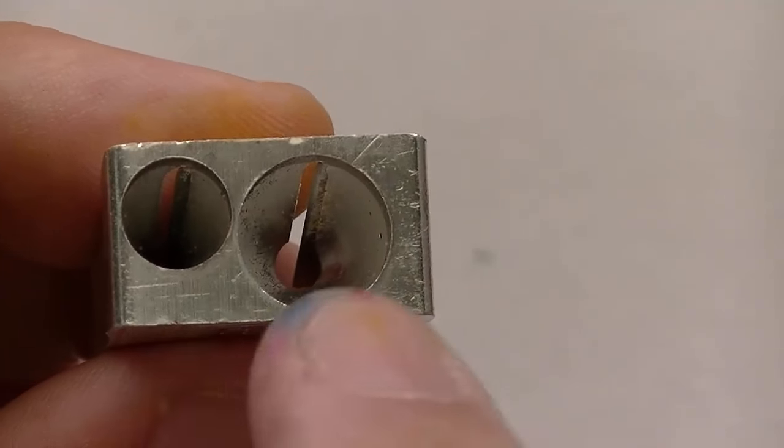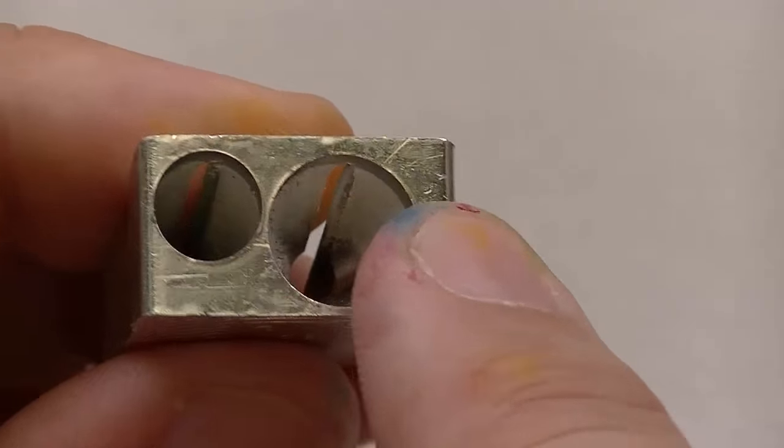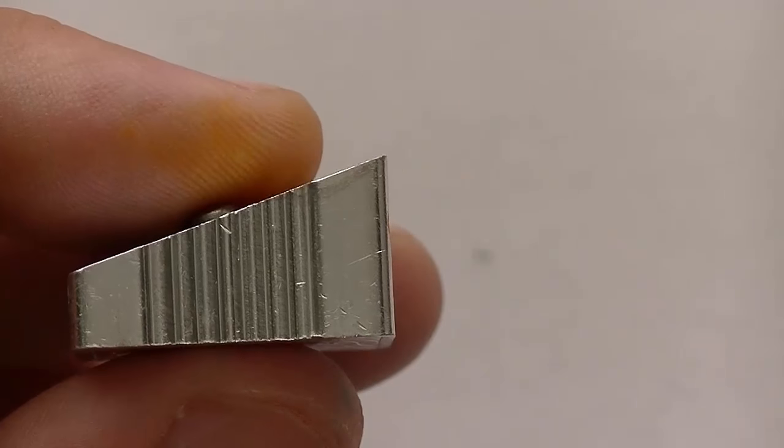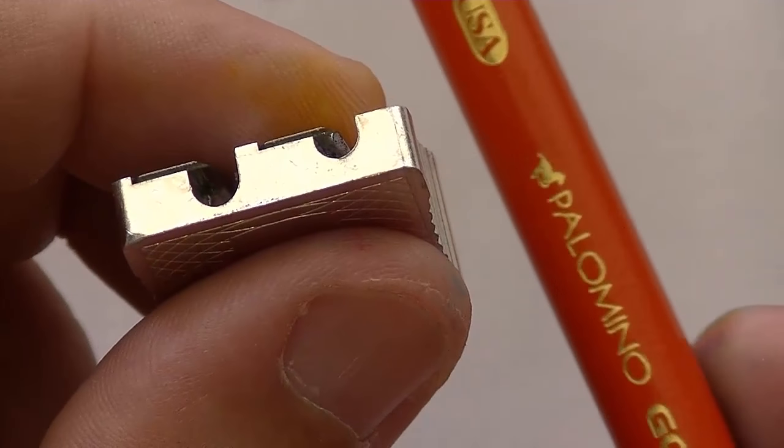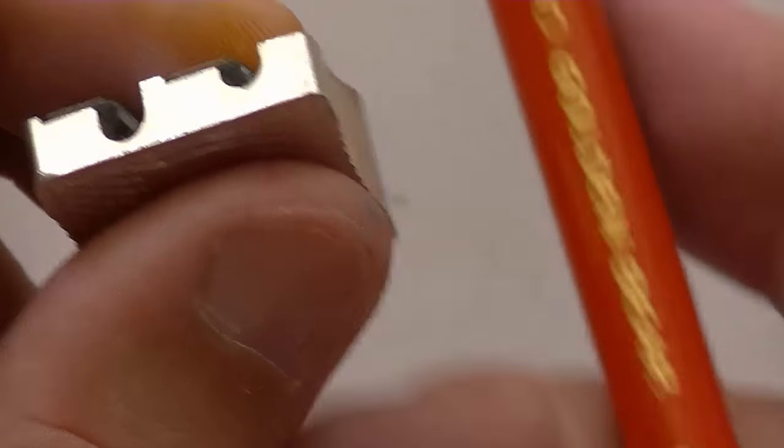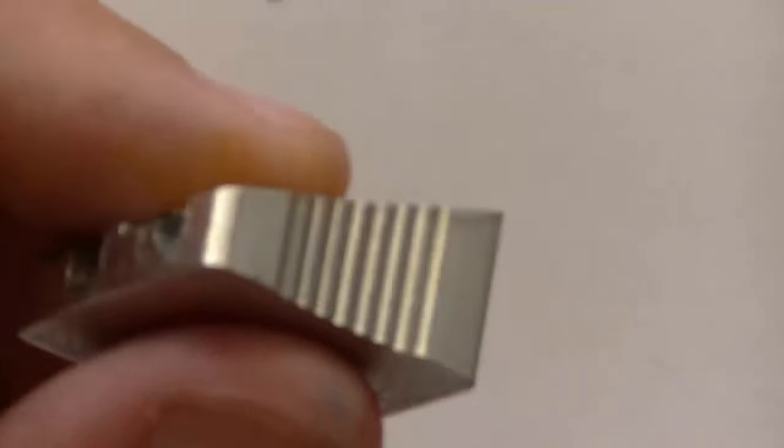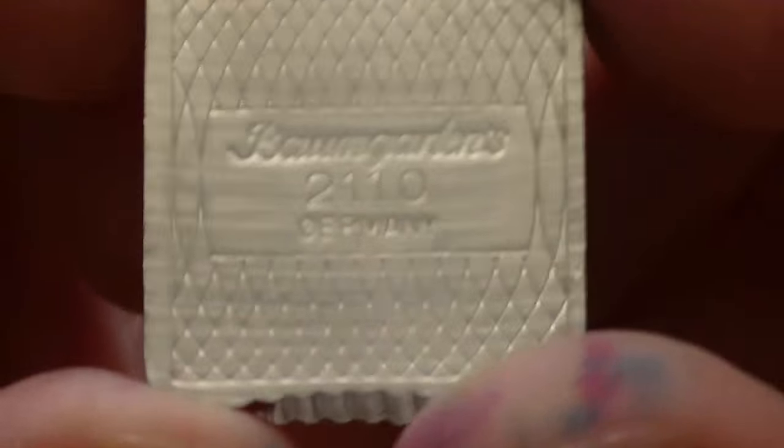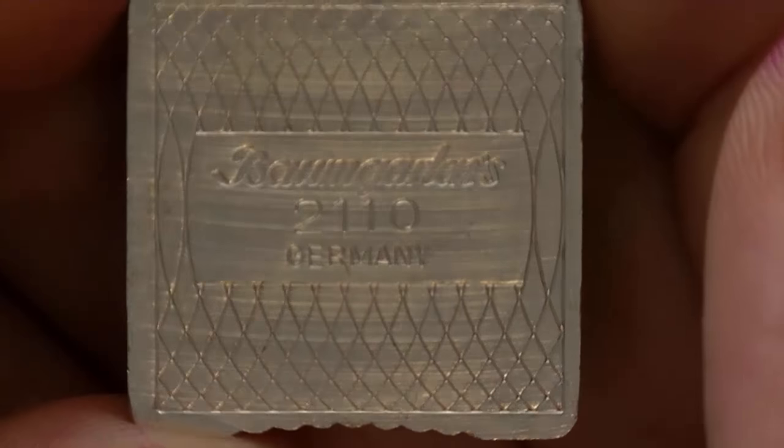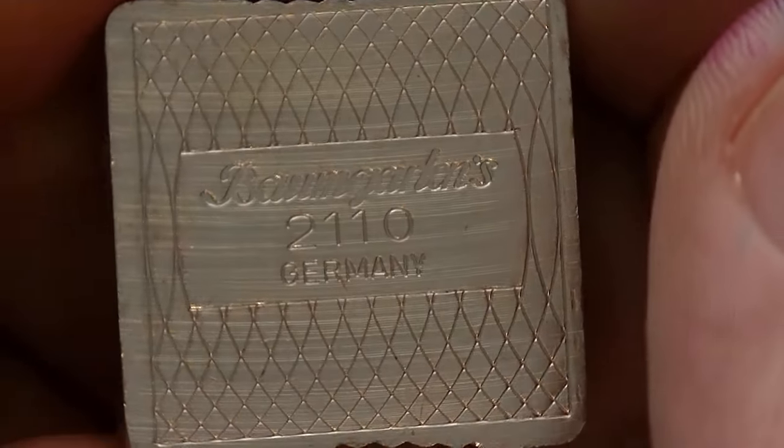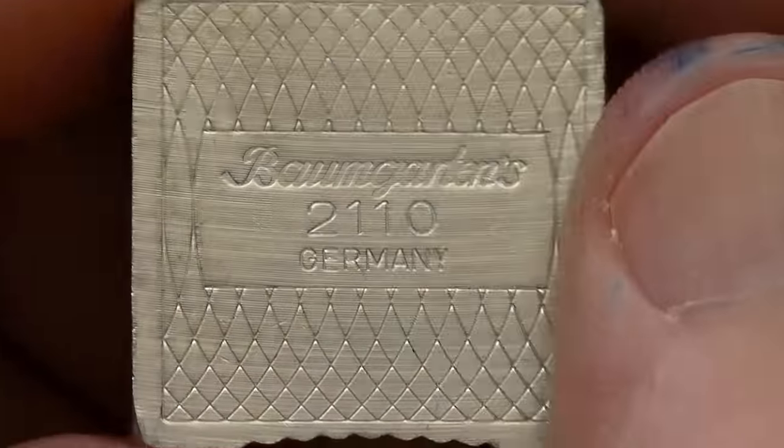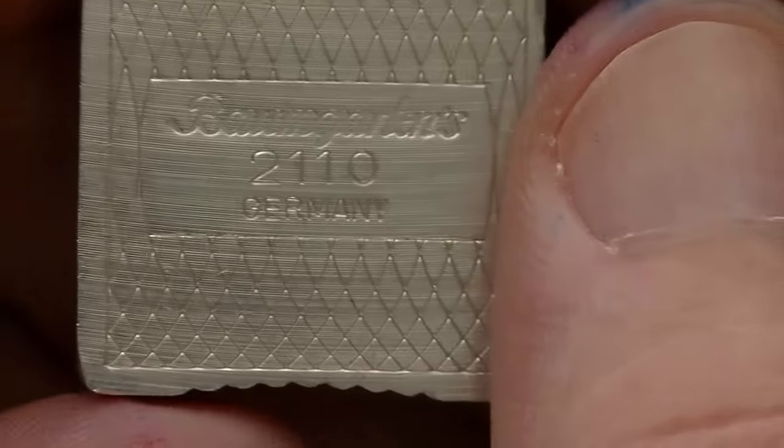Which means that it will take multiple sizes of pencils, which would be a good thing to have if you're dealing with these big round pencils like this Palomino Jumbo here or your standard pencil. The back shows you the name of it right there: Baumgarden 2110 Germany, so it's another German made pencil sharpener.